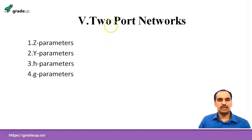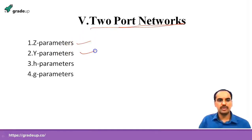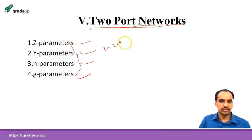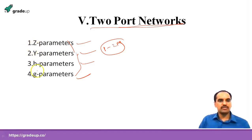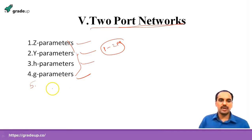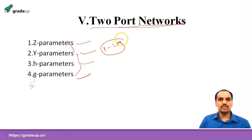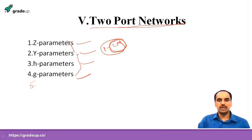The fifth topic, and one of the more challenging ones, is Two-Port Networks. There are four parameters: Z-parameters, Y-parameters, H-parameters, and ABCD (D) parameters. From these four parameters we can expect at least one two-mark question. After studying the parameters, also cover series connection, parallel connection, and cascade connection of two-port circuits. From this topic you can get two to three marks.